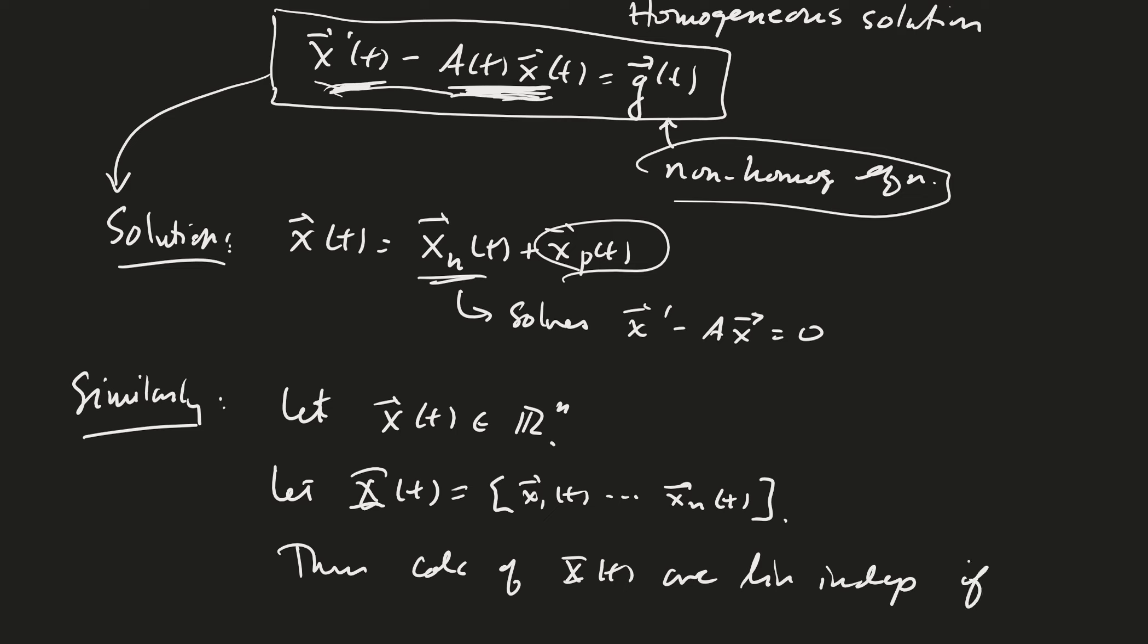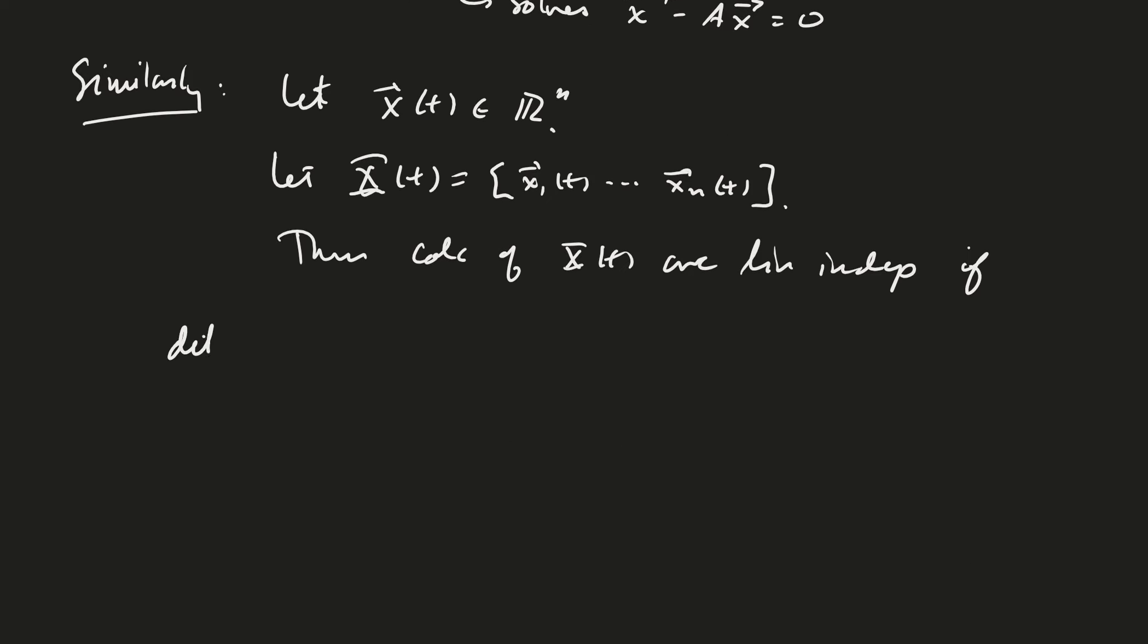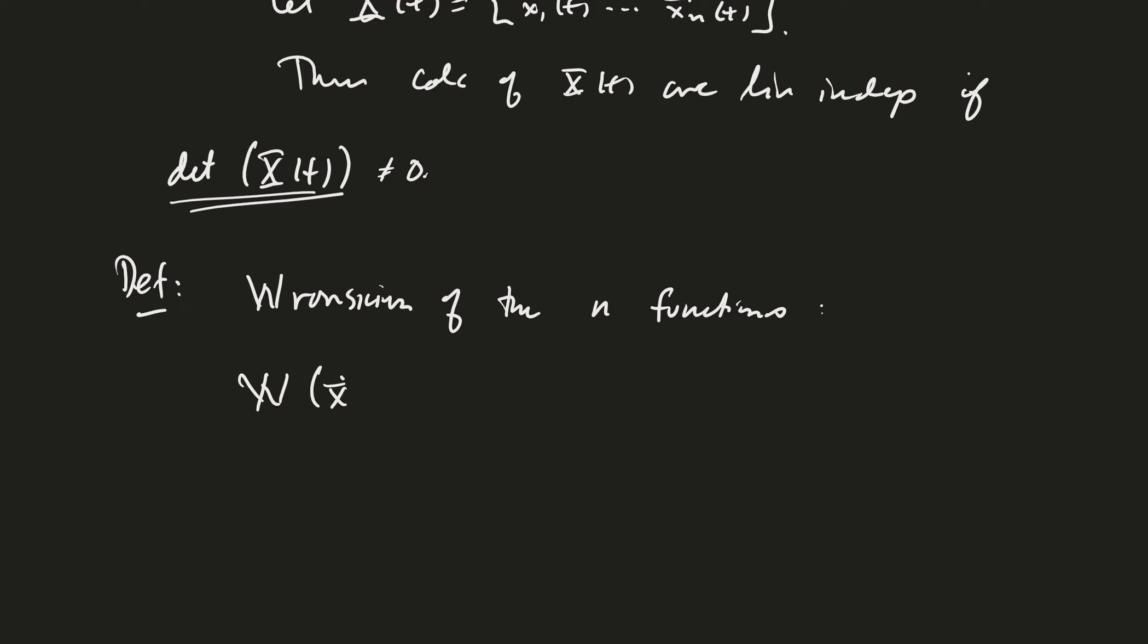Then we could say that the columns of x of t are linearly independent if, do you remember from linear algebra, one set of columns are linearly independent? If a fast way to do it is to just see if the determinant of x of t is equal to zero or not equal to zero. Not equal to zero, right? By the way, the determinant of x of t has a new name here, and that is the Wronskian. The Wronskian of the n functions, vector functions, is defined to be the Wronskian of x1 through xn, these are functions of time, is equal to the determinant of that matrix x of t.